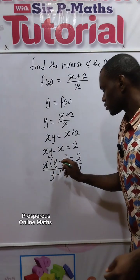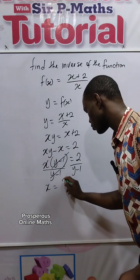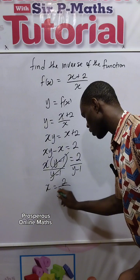Alright, so that y minus 1 cancels y minus 1. I now have x to be equal to 2 over y minus 1.